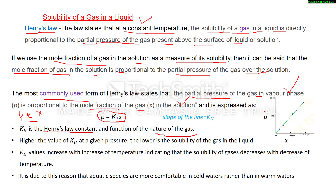If you plot a graph between P and X — P on the y-axis and X on the x-axis — we get a straight line passing through the origin, and the slope of this line is equal to Kh, the Henry's law constant. Some points to remember: higher the value of Kh at a given pressure, lower is the solubility of gas in the liquid — if Kh is high, solubility is low. Also, Kh increases with increase of temperature, which means X decreases, so solubility of gas decreases with increase of temperature. The solubility of gas in a liquid is an exothermic process, and according to Le Chatelier's principle, if we increase temperature, solubility of the gas will decrease.